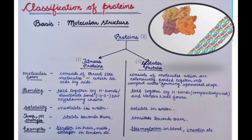On the other hand, fibrous proteins have thread-like structures lying parallel side by side. What holds these structures together? In fibrous proteins, the neighboring polypeptide chains lying side by side are held together by hydrogen bonds or disulfide bonds.